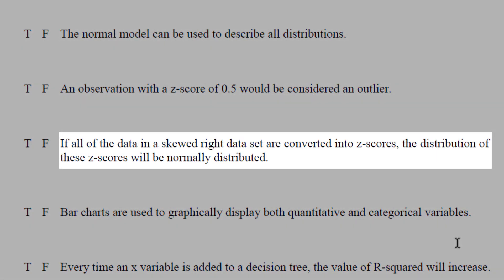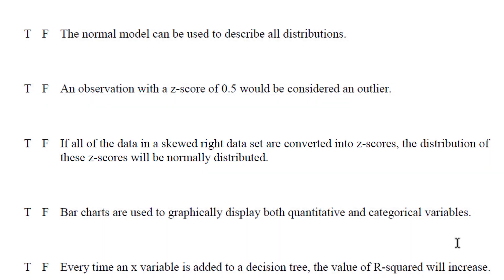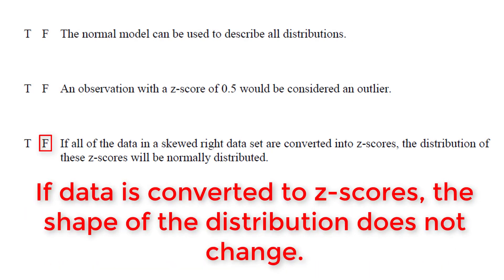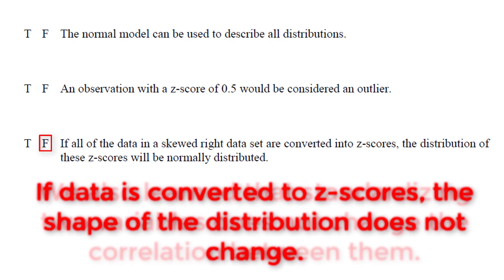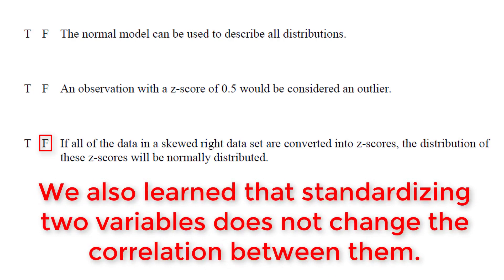If all of the data points in a skewed right data set are converted into z-scores, the distribution of these z-scores will be normally distributed. This actually relates to the very first question. And no, they would not be normal. You can't make things normal by changing them to z-scores. We would just have a data set that is skewed right and is now z-scores. So turning things into z-scores does not change the shape.